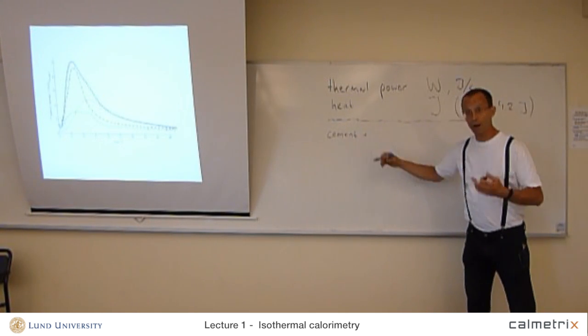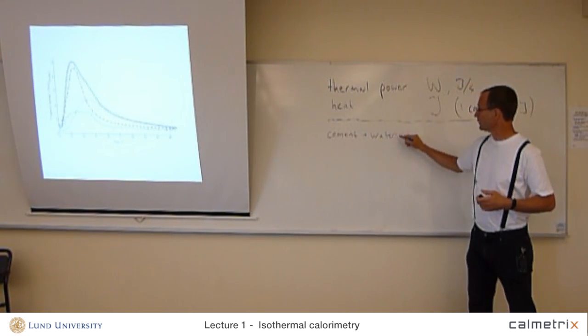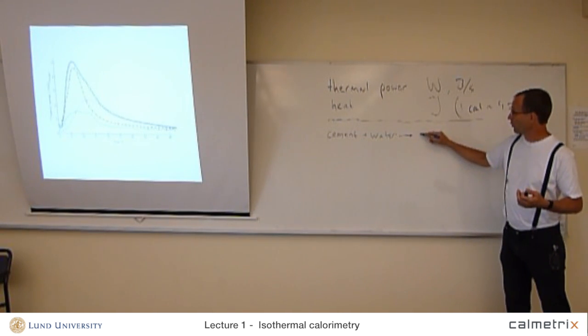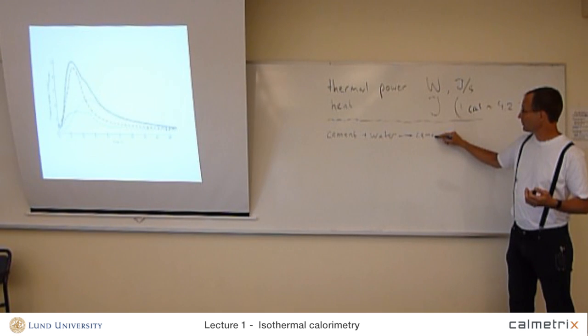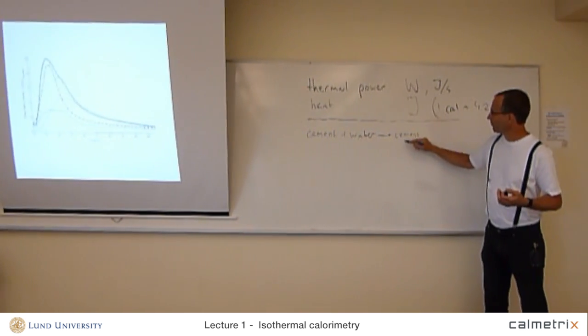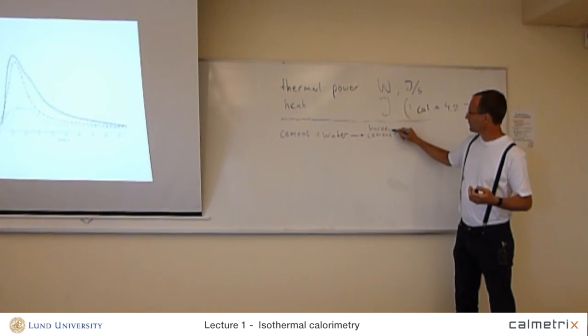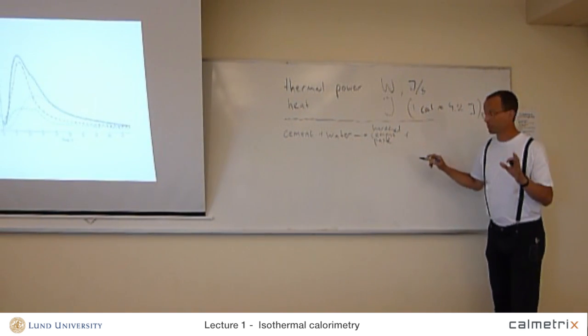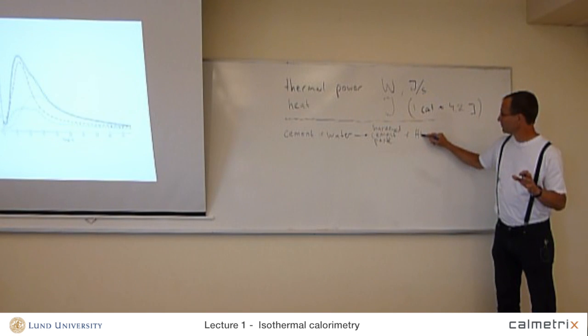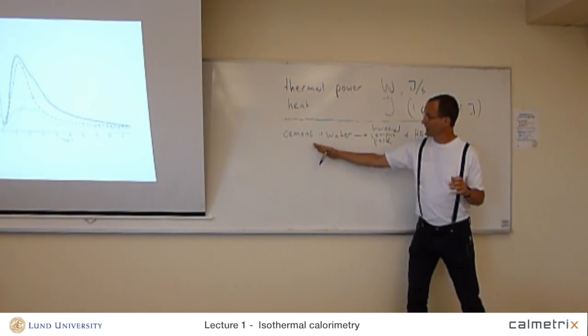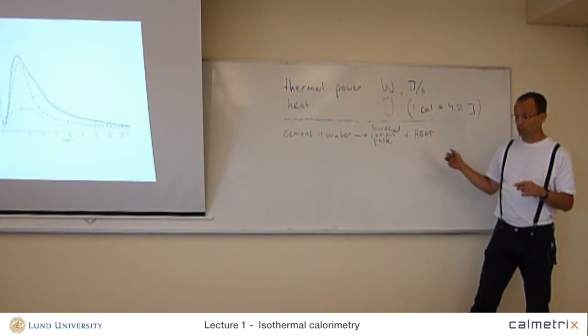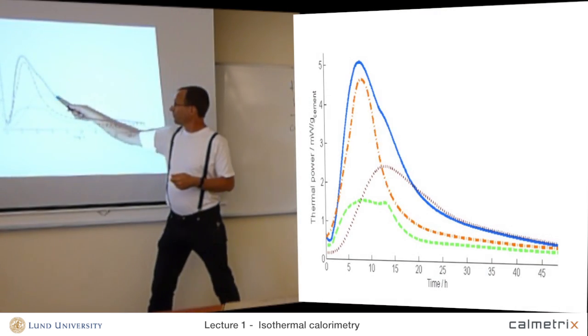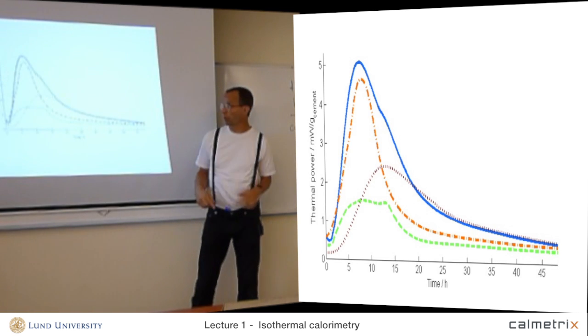The reaction here is actually a very complex chemical reaction, but I'll write it like a simple chemical reaction. We have cement powder that mixes with water. This reacts, hardens, hydrates to form hardened cement paste, plus heat. So when this reaction takes place, heat is produced. That's why we can use the calorimeter to follow the reaction of the cement with the water.